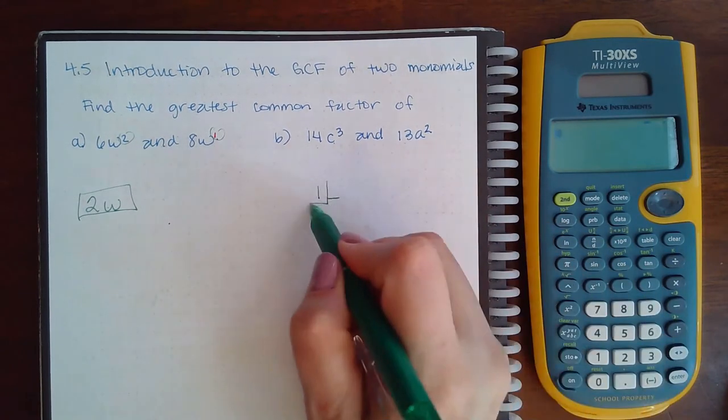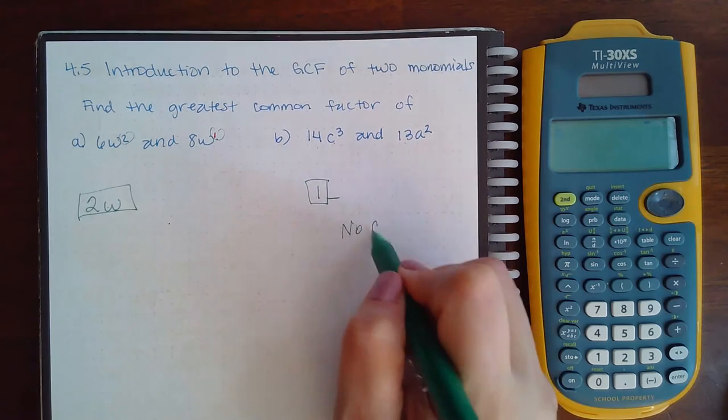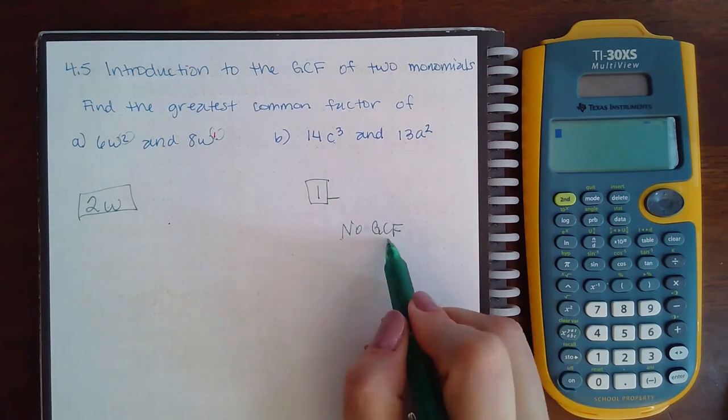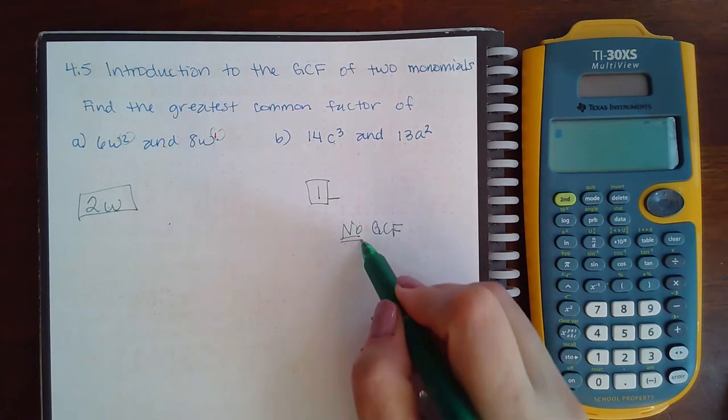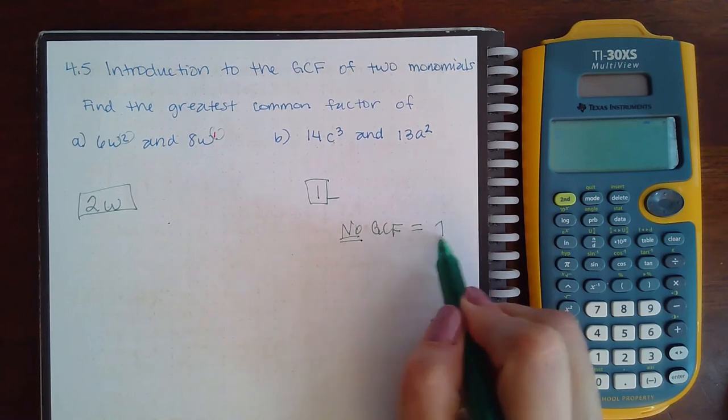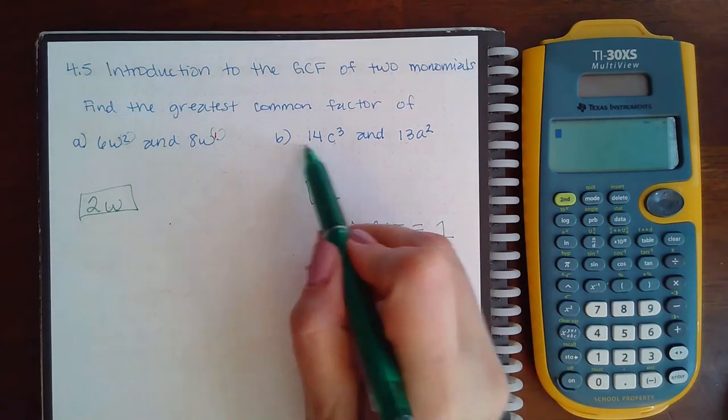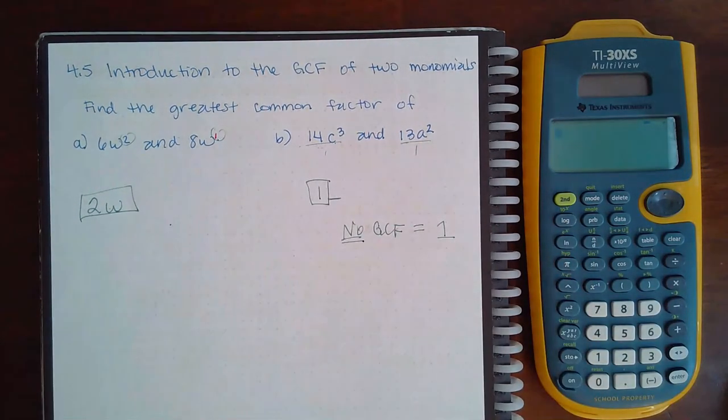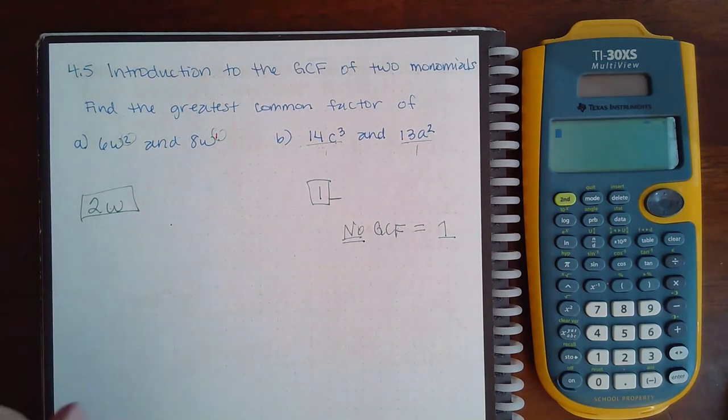This really has no GCF, but we're never allowed to say 'no GCF.' It is 1, and the reason is because I can always divide by 1. So if there is no GCF, like nothing in common, then what you need to say is that the GCF is 1.